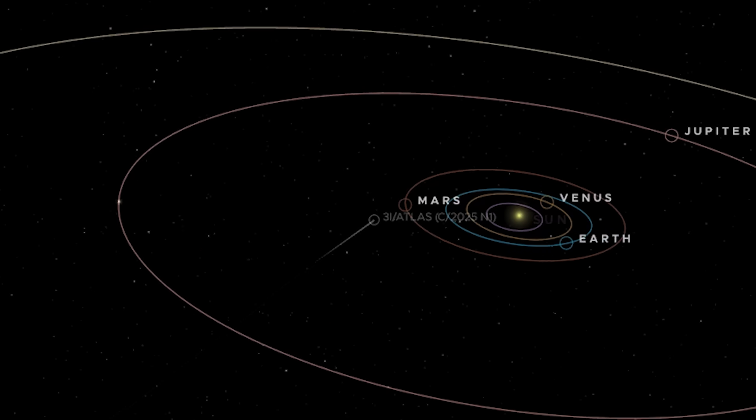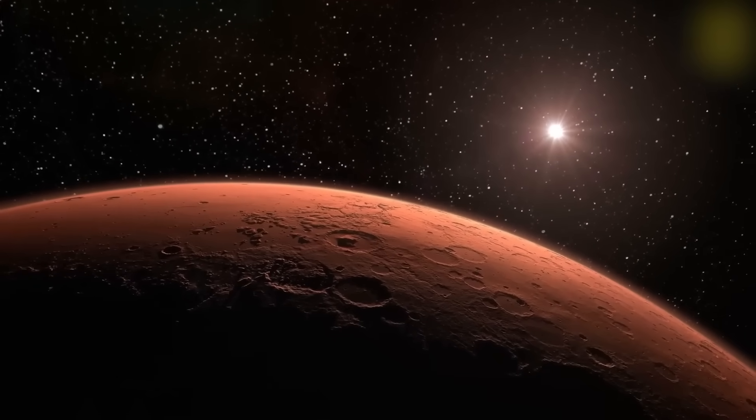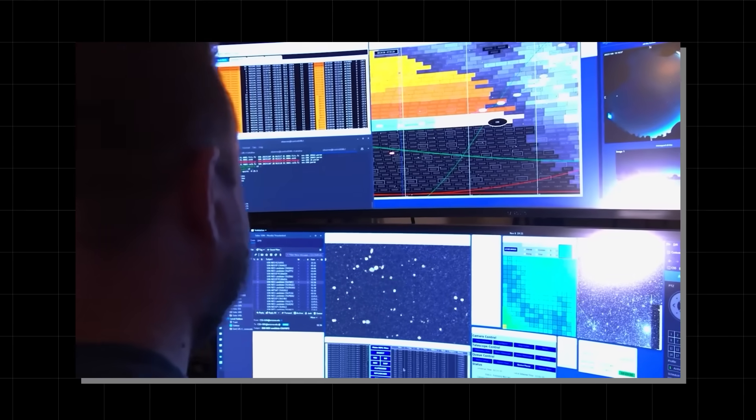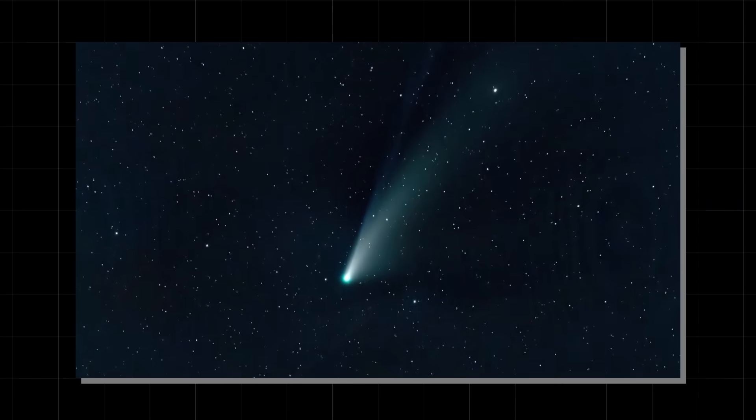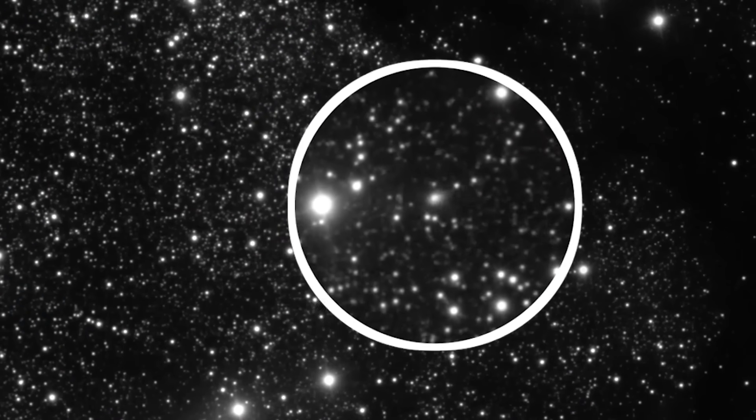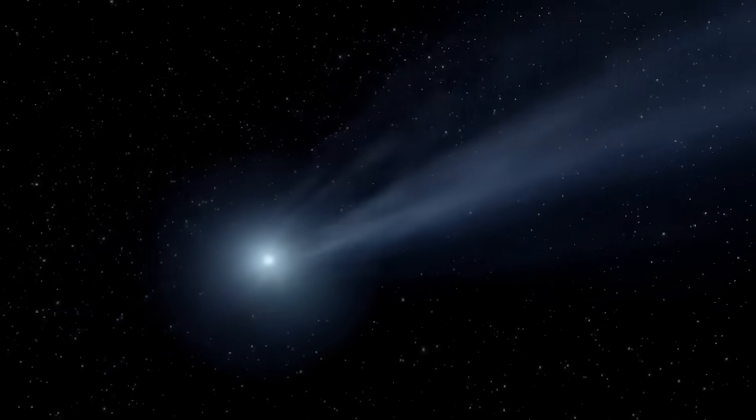The crimson planes of Mars, a planet of fascination and future hope, lie directly in its path. This isn't science fiction, it's a real and developing situation. The sheer size and speed of this object are staggering, making it a threat of planetary proportions.